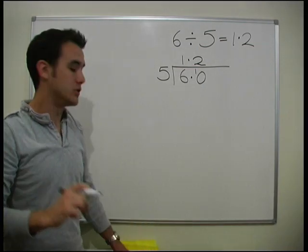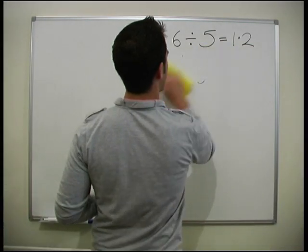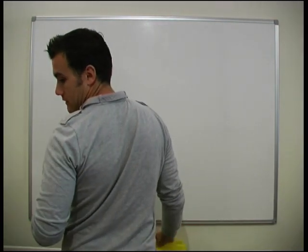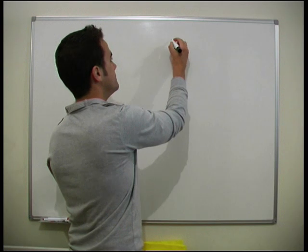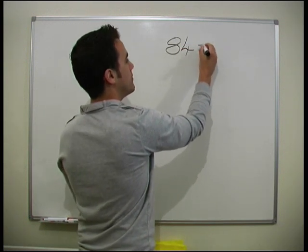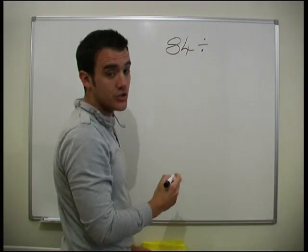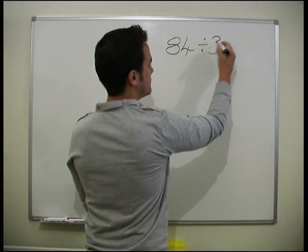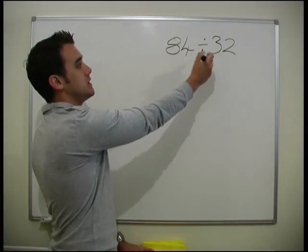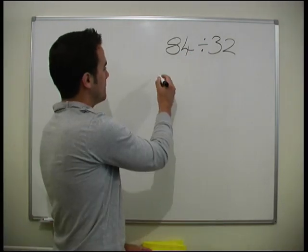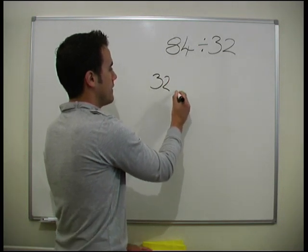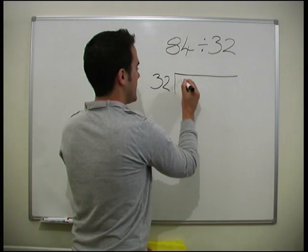It's that straightforward. Now let's look at a slightly more complicated example. Let's look at 84 divided by 32. It's how many 32s go into 84, so we put our 32 outside and we've got 84 inside.